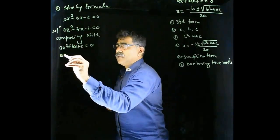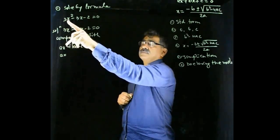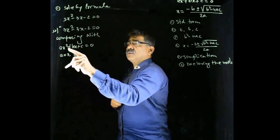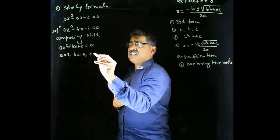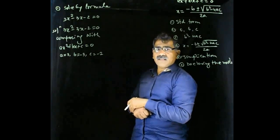I will get value of a. a is coefficient of x square. It is this 3. b is coefficient of x, minus 3. And c is a constant term. It is negative 2. We got these values.